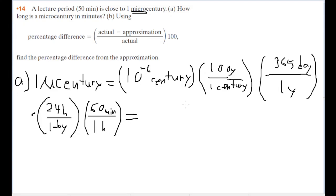Now if we plugged in all this into our calculator to get the full conversion, then we'll find that one micro century is actually equal to 52.6 minutes, which is actually really close to 50 minutes.